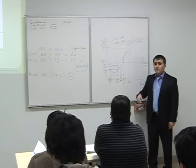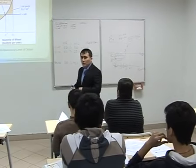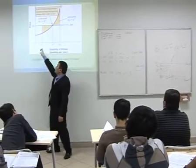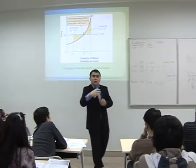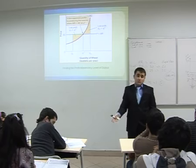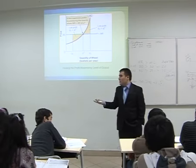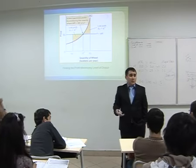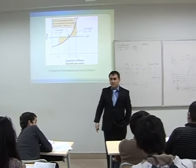On Q sub 1, you still have room to increase total profit. On Q sub 2, it is not rational behavior to produce there. We have to conclude here — let's take a break.